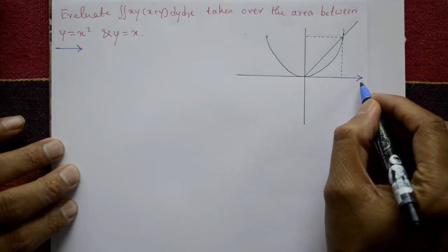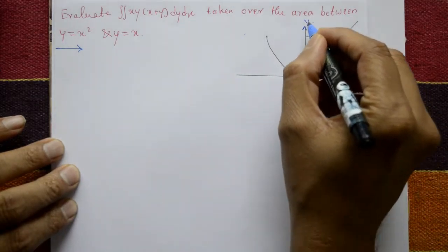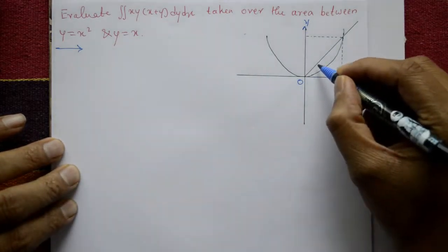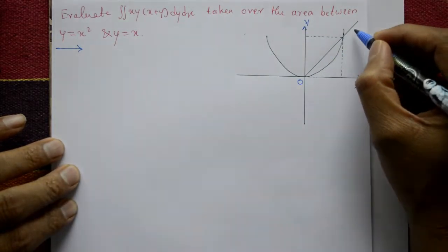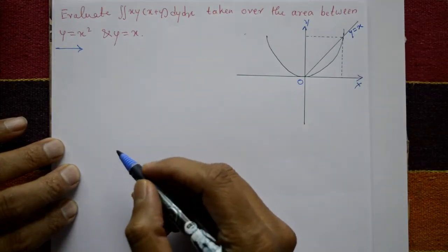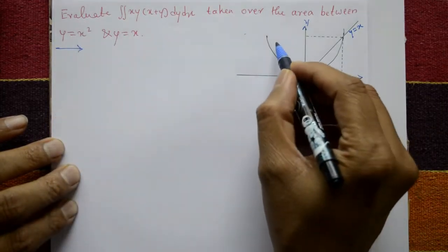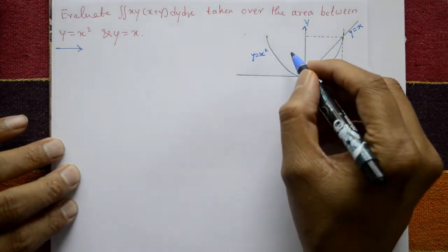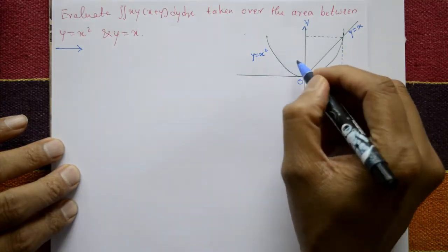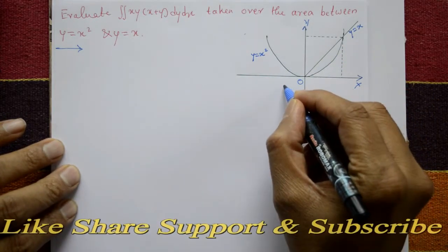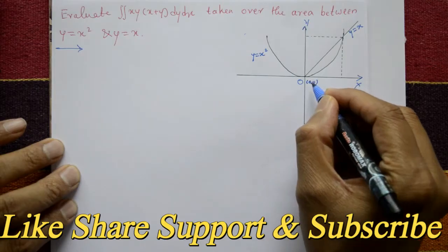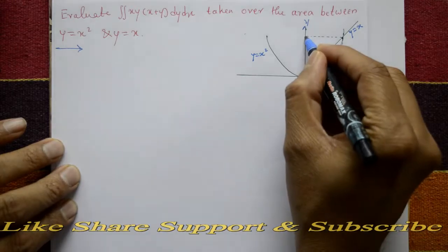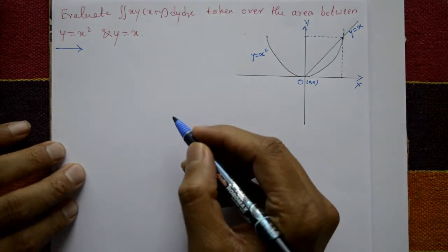Now y equals x squared — this is the x-axis and this is the y-axis, this is the origin. y equals x is a straight line passing through the origin. y equals x squared is a parabola, symmetric about the y-axis. The origin is at (0, 0).